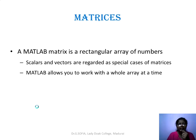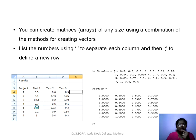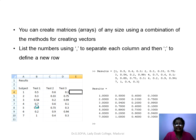MATLAB allows you to work with a whole array at a time. To create a matrix, use both comma and semicolon together. For example, 'results = [1, 0.5, 0.6, 0.3; 2, 0.3, 0.33, 0.75]' — comma separates values within a row, and semicolon indicates the end of a row to start the next row.